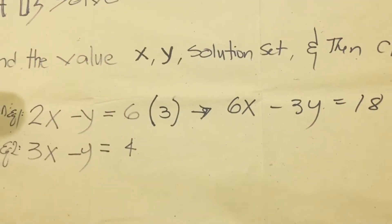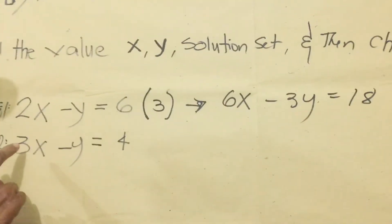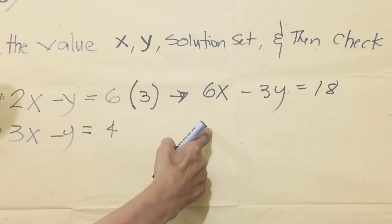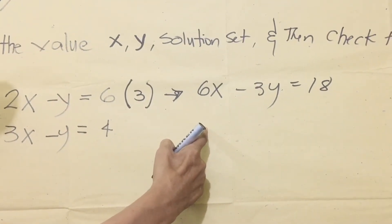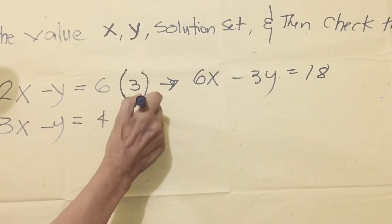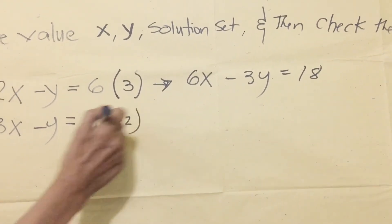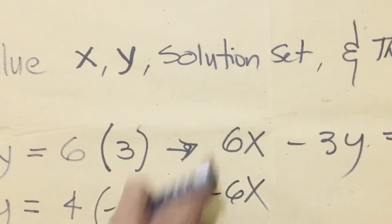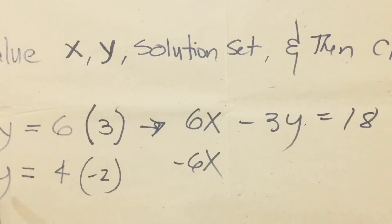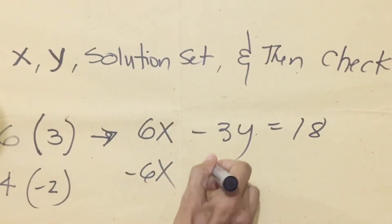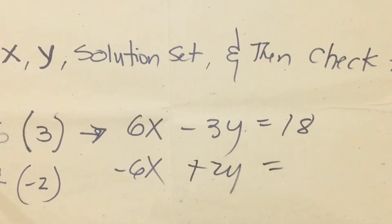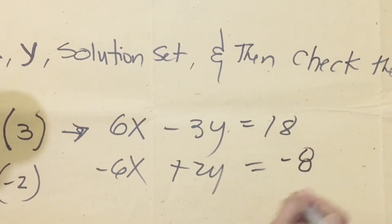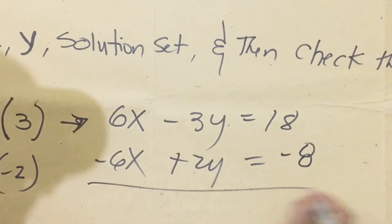So I'm going to try another number. If we multiply the second equation by negative 2: 3x times negative 2 equals negative 6x, and negative 2 times positive y equals positive 2y, and 4 times negative 2 equals negative 8. Now we are going to add the two equations.